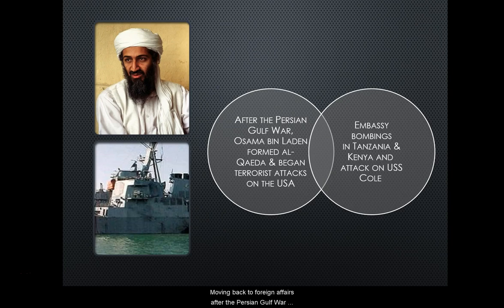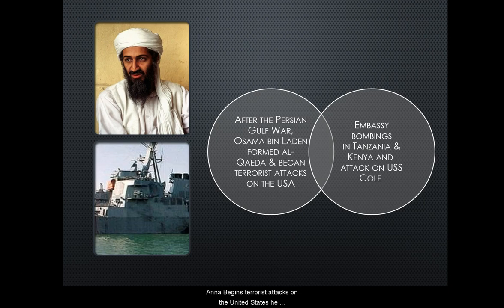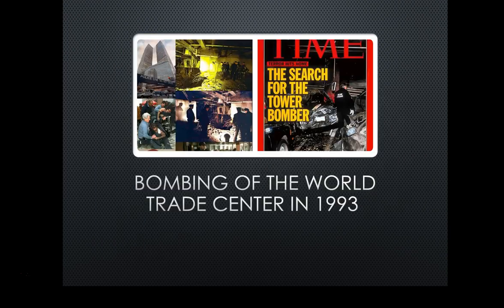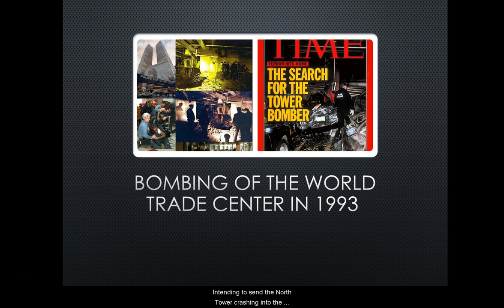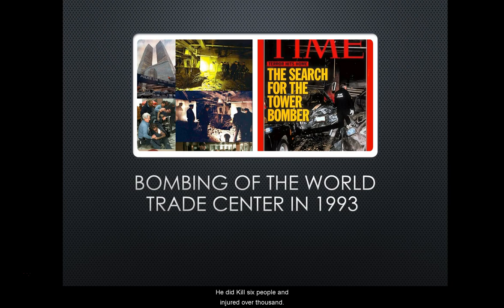Moving back to foreign affairs, after the Persian Gulf War, Osama bin Laden formed a terrorist militant Muslim organization called Al-Qaeda and began terrorist attacks on the United States. He began with embassy bombings in Tanzania and Kenya and an attack on the USS Cole, an American warship. Later, he bombed the World Trade Center in 1993, intending to detonate a truck in the parking garage below the north tower to send it crashing into the south tower to kill thousands. This plan did not fully work in 1993 — he did kill six people and injure over a thousand, but it was not nearly to the extent we would see on 9/11.